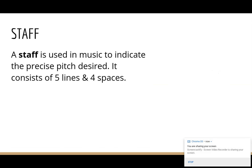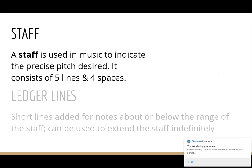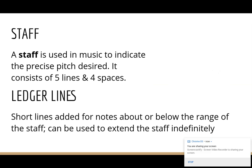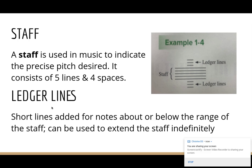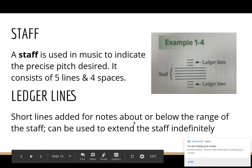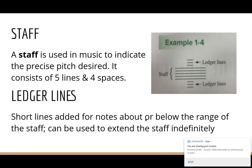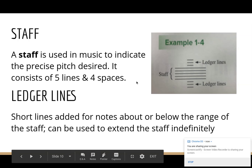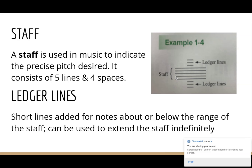So we use a staff to indicate the precise pitch desired. A staff has five lines and four spaces. Sometimes we need ledger lines. So ledger lines are short lines added for notes above or below the range of the staff. It can be used to extend the staff indefinitely. So if we look up at our picture, our staff are the five lines and four spaces where music is written.